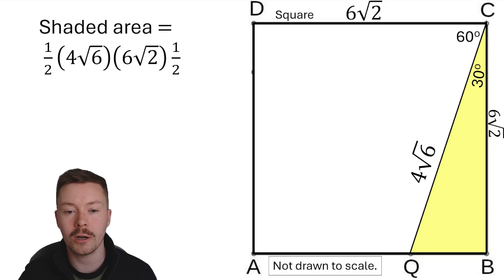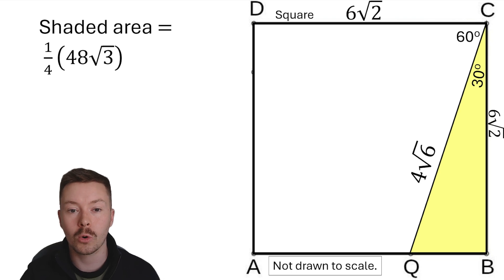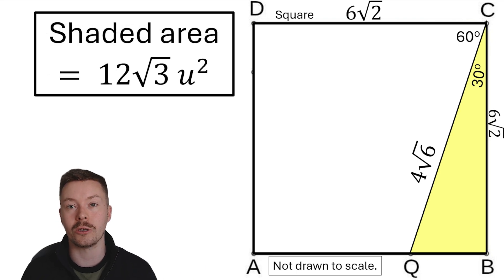Sine 30 is a half, half times a half is a quarter, 4 root 6 times 6 root 2 is 48 root 3, a quarter of that gives us a final answer of 12 root 3 units squared. Well done if you did this yourself and you got the same answer.